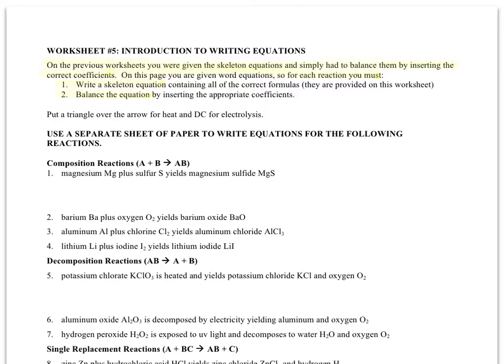So there's going to be two steps rather than one step in these problems. The first step is to write out a skeleton equation from the word description of the equation provided. And then the second step will be to balance the equation using coefficients like you have done before. So I think you will see that this is not really adding much more complexity beyond what you've already done on worksheets 3 and 4.